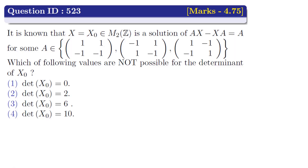The question is: it is known that x = x0 belonging to M2(Z) is a solution of Ax - xA = A, for some A belonging to a set containing matrices with elements [[1,1],[-1,-1]], [[-1,1],[-1,1]], and [-1,1],[-1,-1],[1,-1],[-1,1]]. Which of the following values are not possible for the determinant of x0? Option 1: det(x0) = 0. Option 2: det(x0) = 2. Option 3: det(x0) = 6. Option 4: det(x0) = 10.